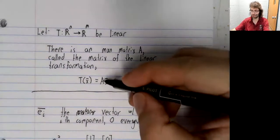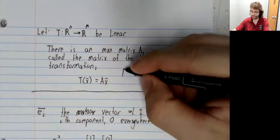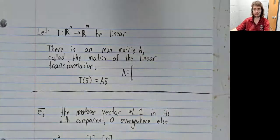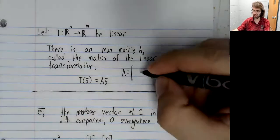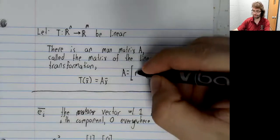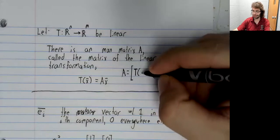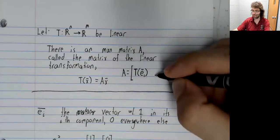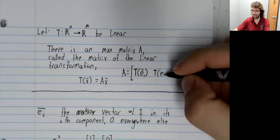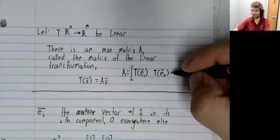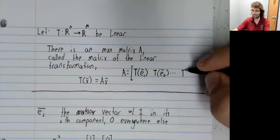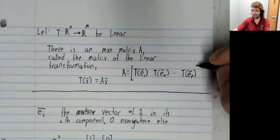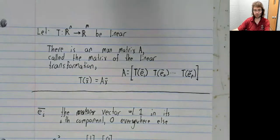This matrix A has as its columns the following vectors: T of e sub one, T of e sub two, and so on up to T of e sub n.